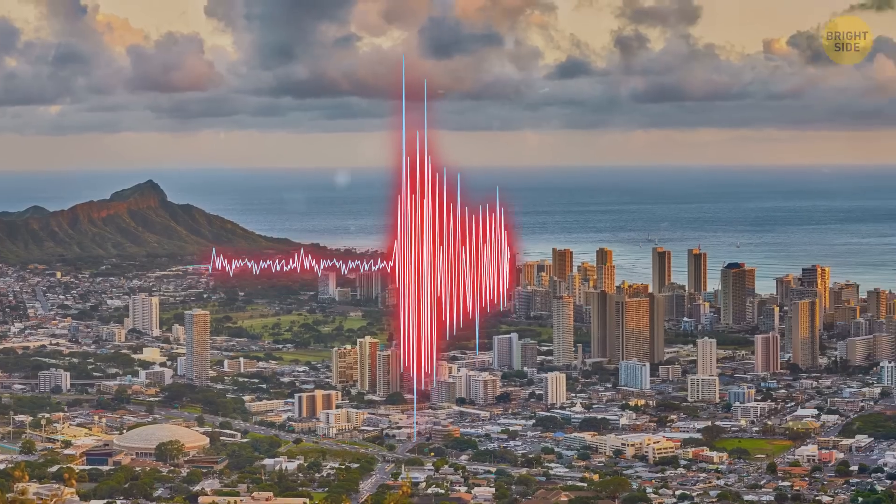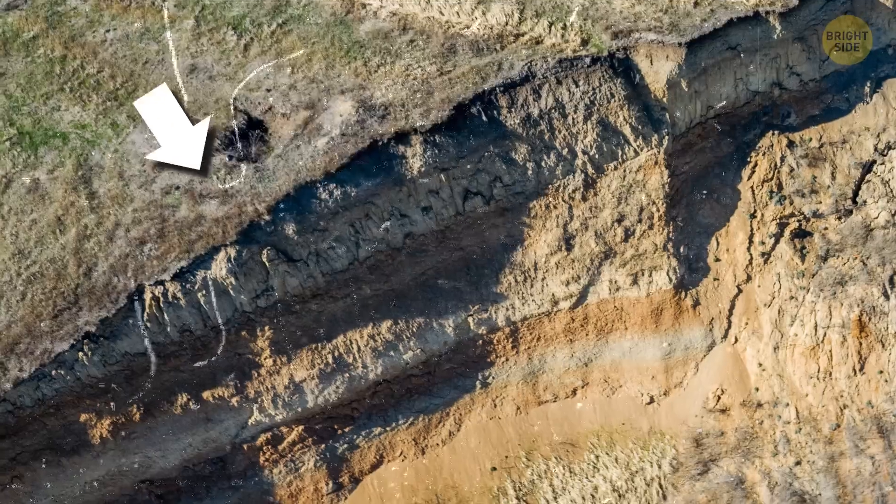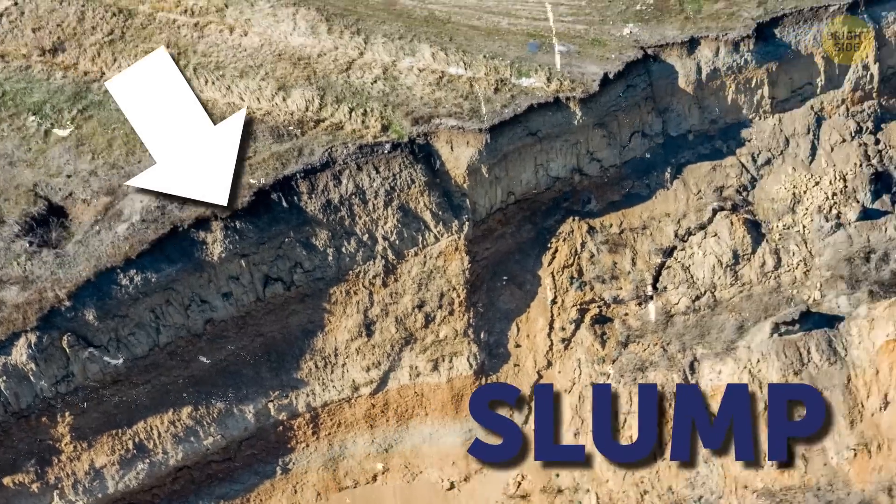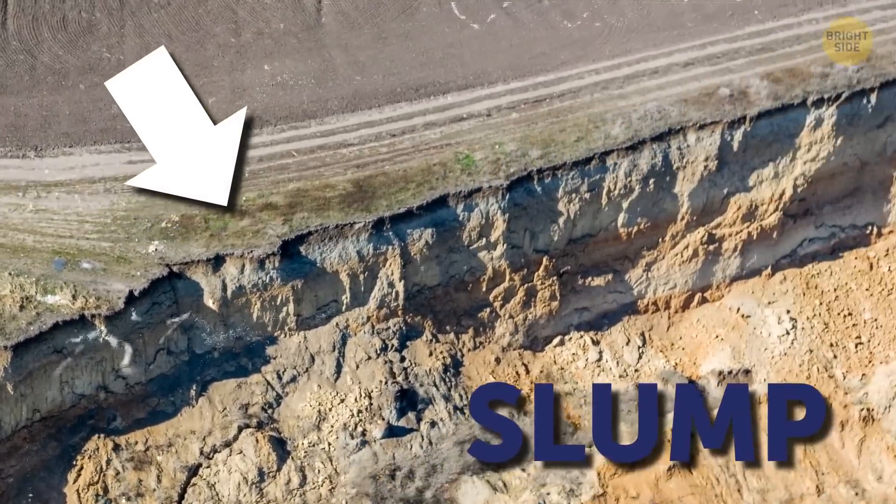With each quake, the magma rocks on the slopes of the volcano shift down. These rock formations are called slumps, and the Hilena slump is the most notorious of them all.